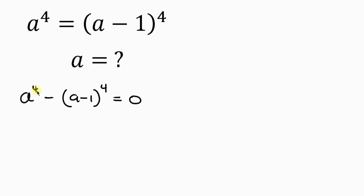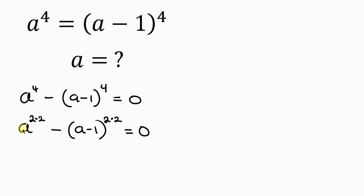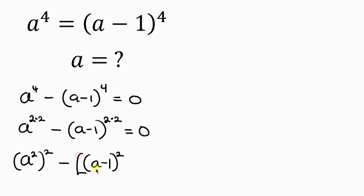Now this a to the 4th can be simplified as a to the 2 times 2, and 2 times 2 is 4. We do the same thing for the other term: a minus 1 all raised to the 2 times 2, which gives 4, equal to 0. We can write this as a squared all raised to the 2, minus a minus 1 all squared all raised to the 2, equal to 0.